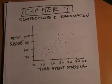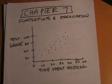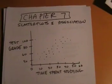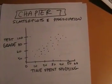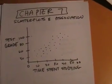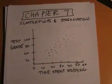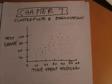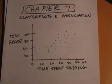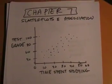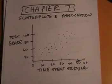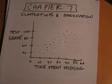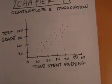Hello! I hope everybody's doing well out there. What we're going to do here is talk quickly — a little brief intro to Chapter 7. We're going to talk about scatter plots and association, and also this word called correlation, which is a measurement of strength. But we'll get to that in the next video. Right now we're going to talk about what this scatter plot thing is.